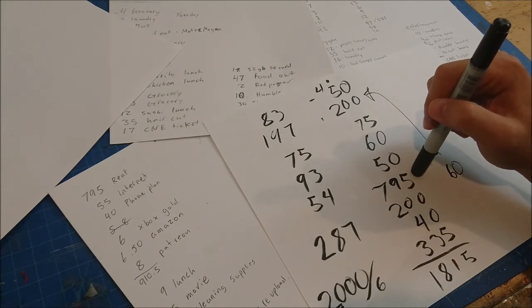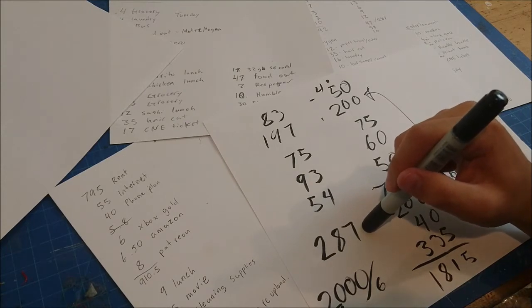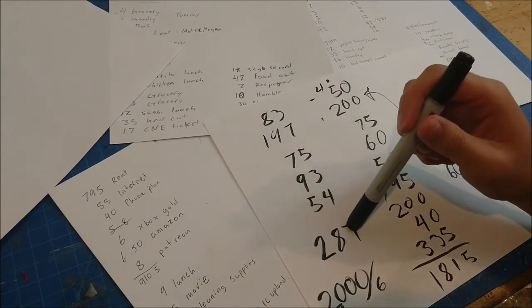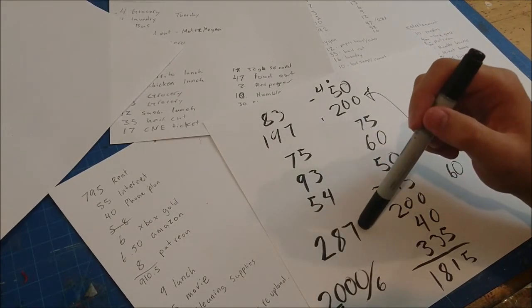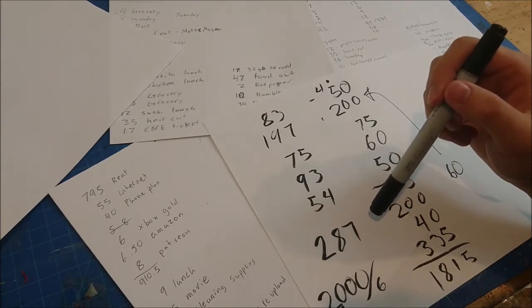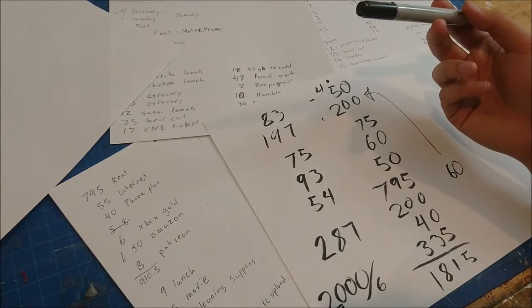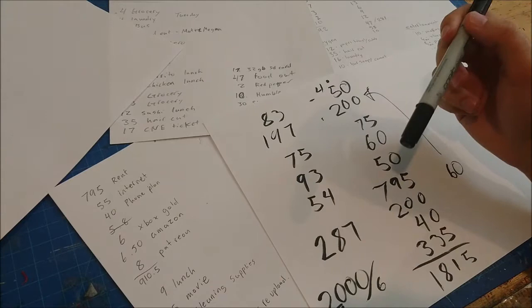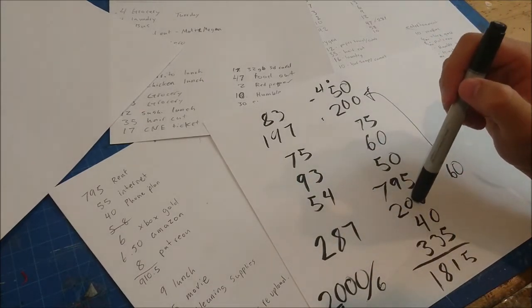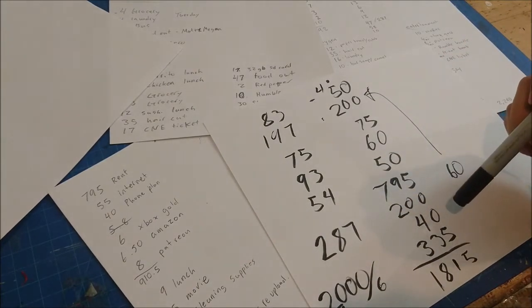And then $287 for eating food out. This is clearly my most unneeded expense but at the same time it's like well, fuck it. A lot of times when I hang out with people we go and eat out somewhere so I'm not gonna drop it a lot but I'm gonna try to keep it to $200 next month.